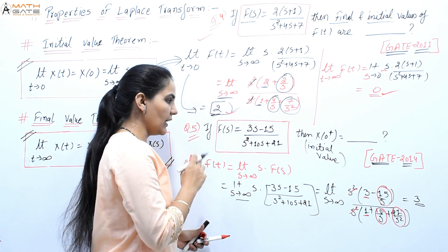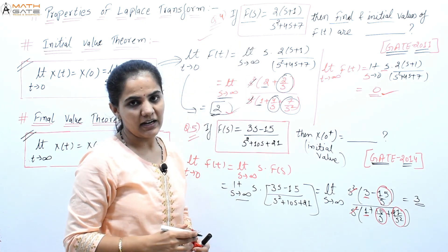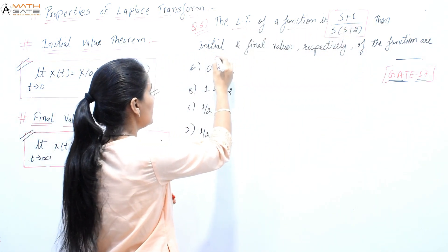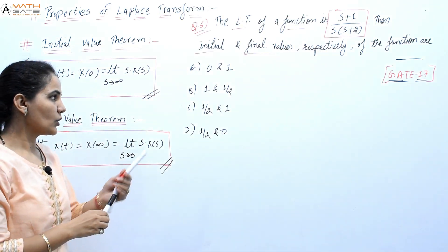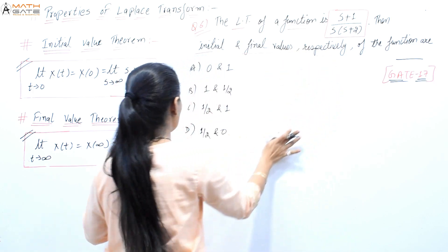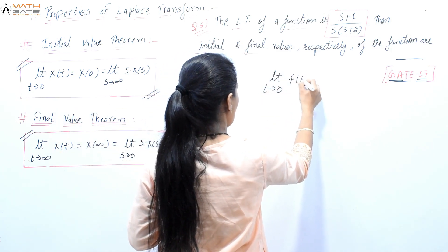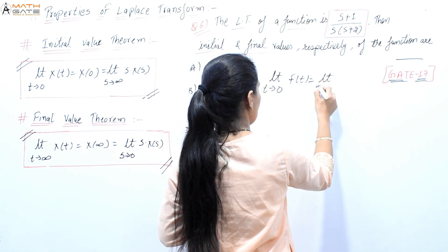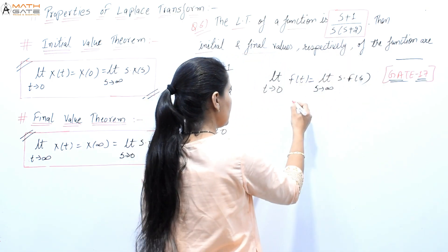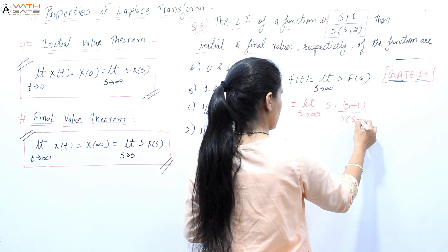Now let's discuss the GATE 2017 question. The Laplace transform of a function is F(s) = (s+1)/(s+2). Find the initial and final values respectively. Applying the initial value theorem: limit t→0 of f(t) = limit s→∞ of s·F(s) = limit s→∞ of s·(s+1)/(s+2).